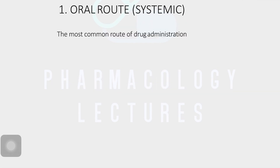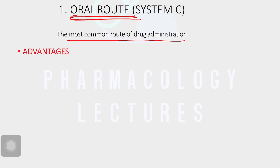The first important route is the oral route — it's the most common route of drug administration. Mostly we are giving drugs orally, especially if the patient is cooperative and willing to take the drug. So what are the advantages of choosing the oral route?